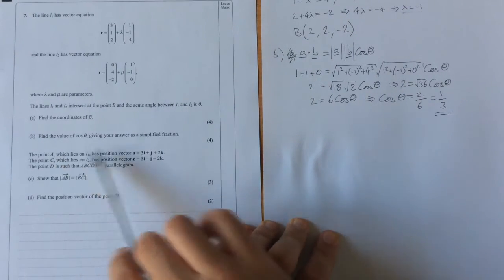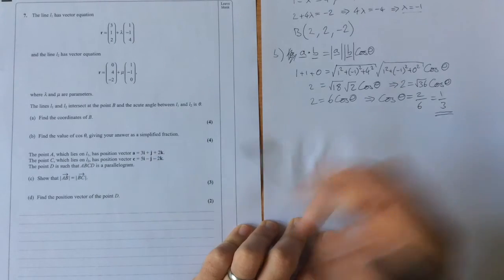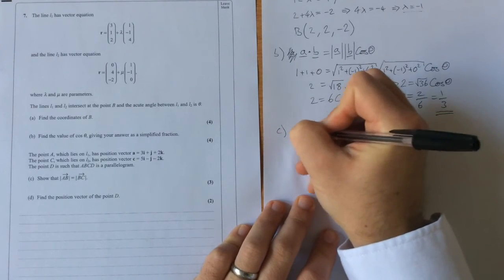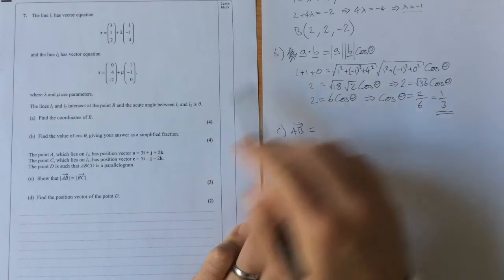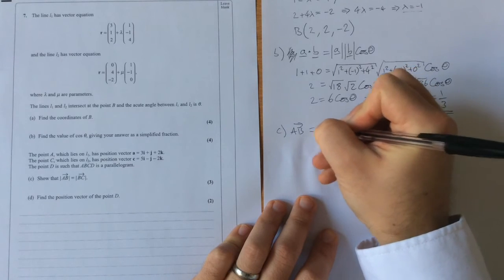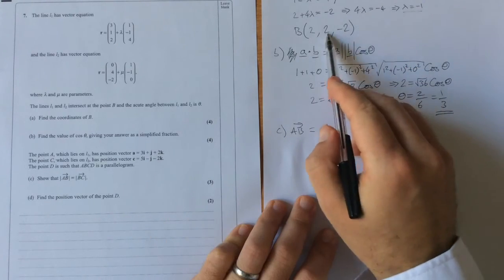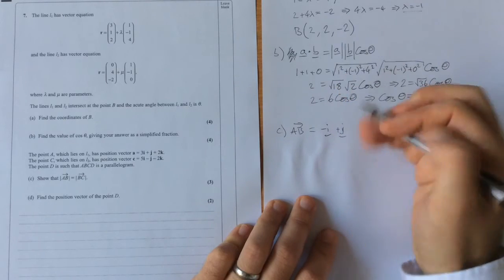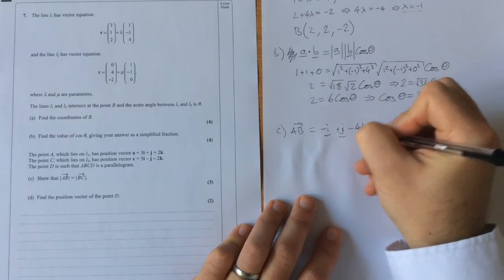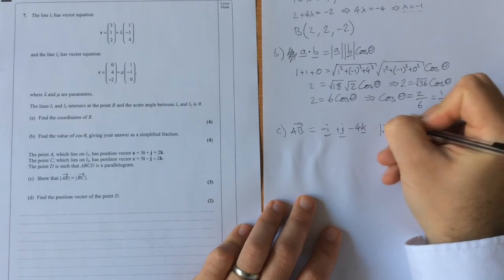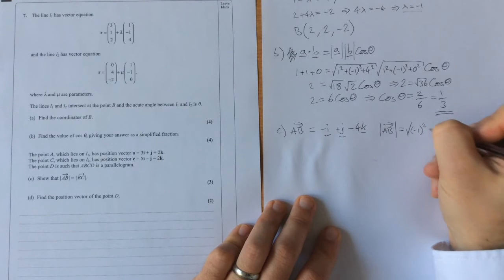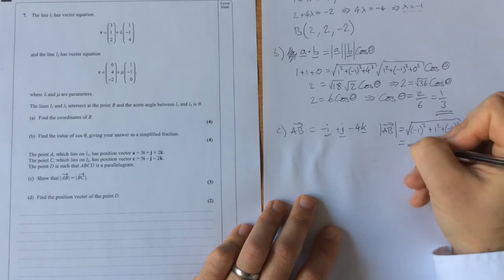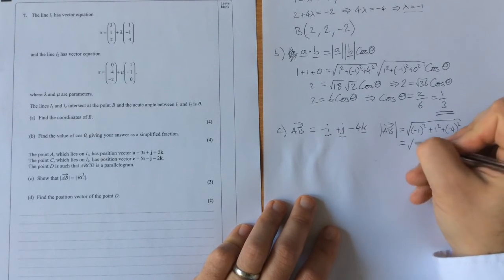Going on to part c, we're given two points and we're asked to prove distances between them. So here we're going from a to b. Now to go from a to b, we're going from 3i to 2, so we're going minus i, we're going from j to 2j, so we're going plus j, and we're going from 2k to minus 2k, we're going minus 4k. The modulus of a to b is then the square root of minus 1 squared plus 1 squared plus minus 4 squared, which is equal to the square root of 1 plus 1 plus 16 root 18.